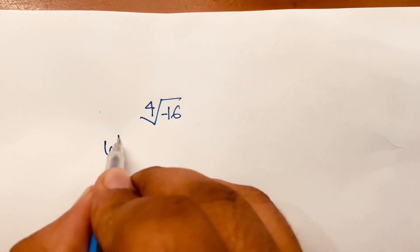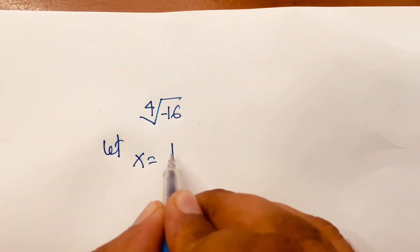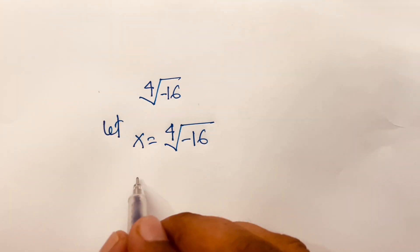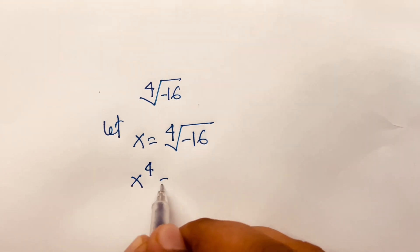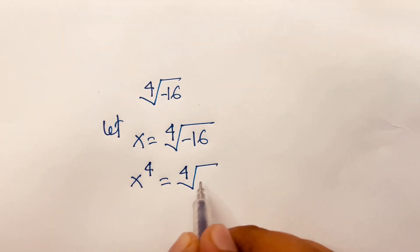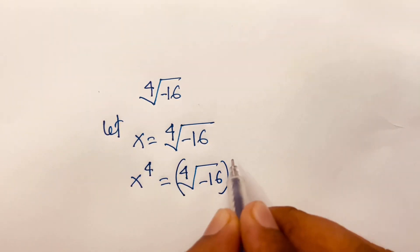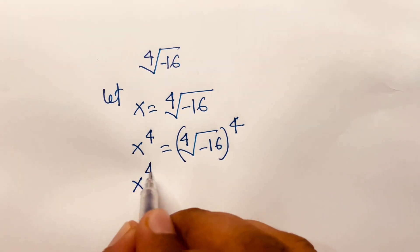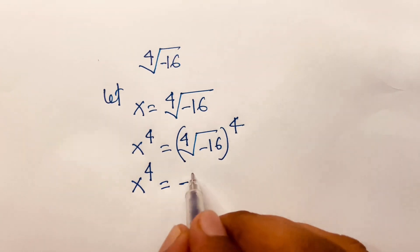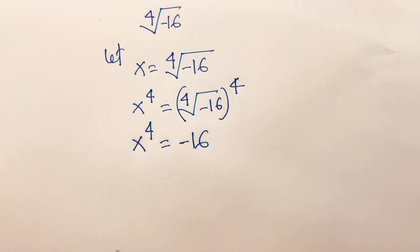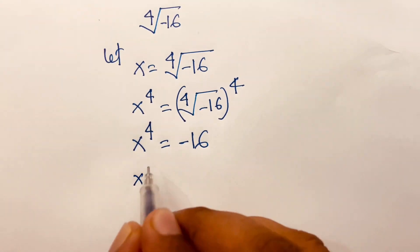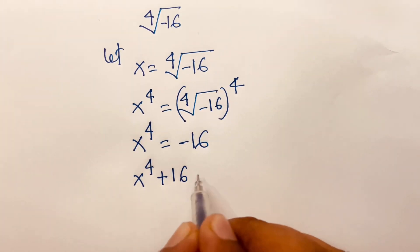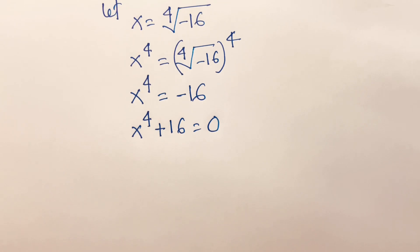Now I'll solve this using another method. Let x = ⁴√(-16). Raising both sides to the power 4, the 4th root and power 4 cancel, giving x⁴ = -16.